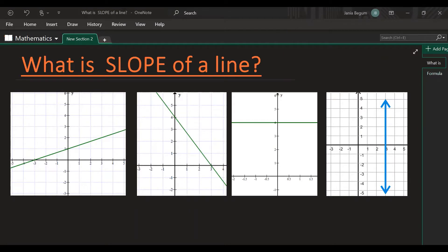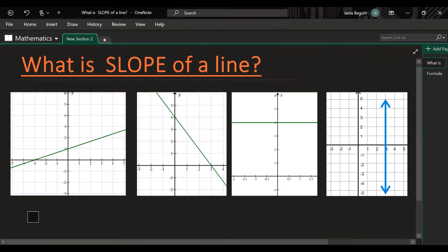What is slope of a line? Take a look at these four images I have here. The one on the left, the very first image, you can see the graph as you read from left to right, it has a positive slope because it's going up. So we say that this line has a positive slope.